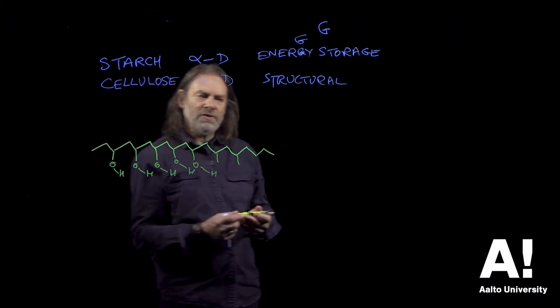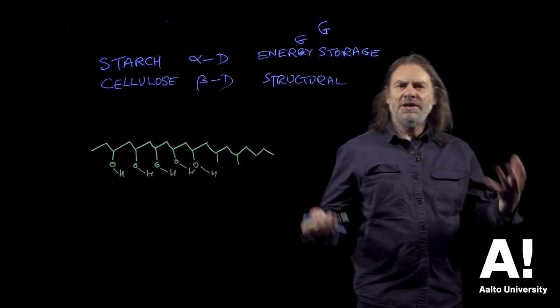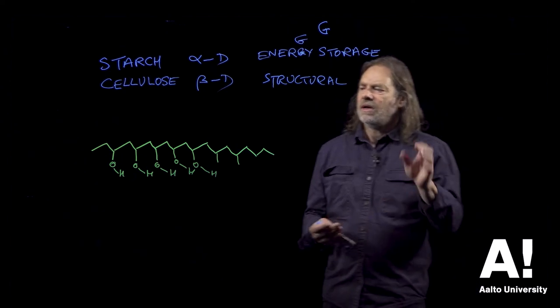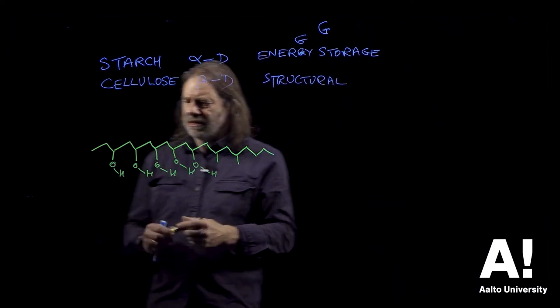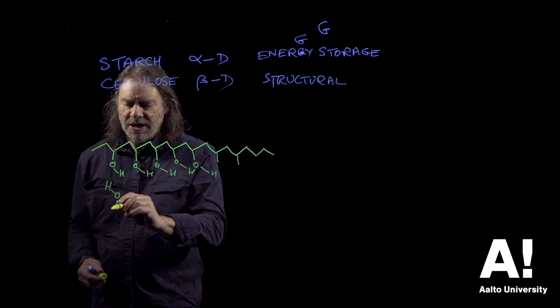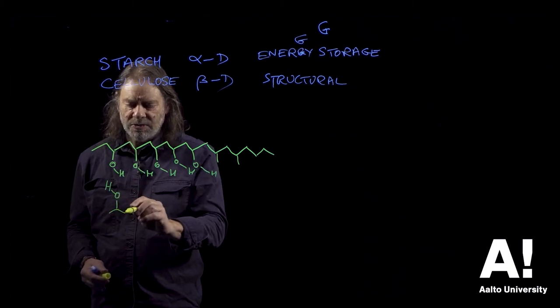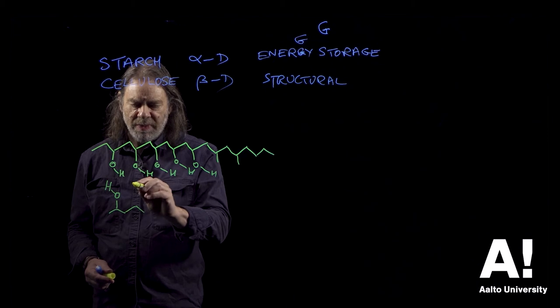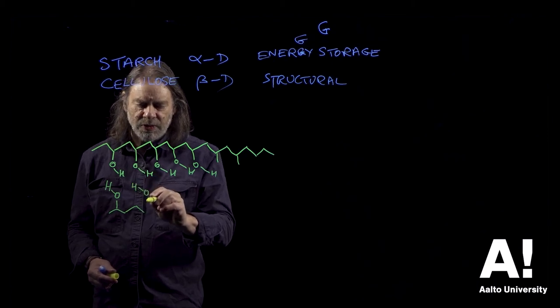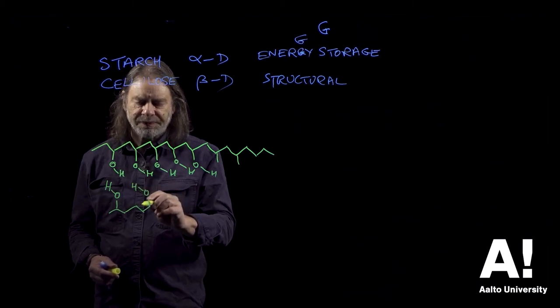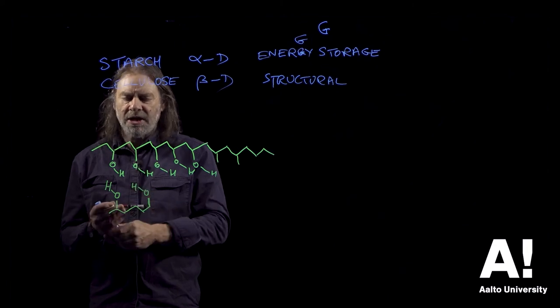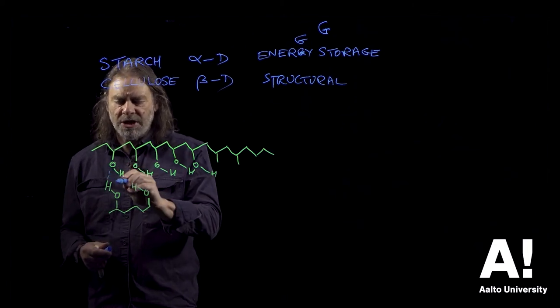So the idea here is that we have all these hydroxyl groups arranged in a very regular pattern on the cellulose chain, and the adjacent cellulose chain has hydroxyl groups arranged in the same pattern so that we get this ability to hydrogen bond between the adjacent chains.